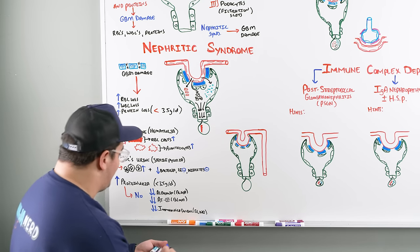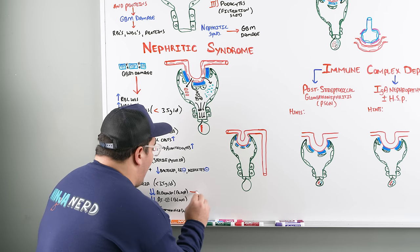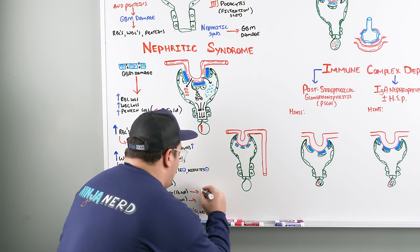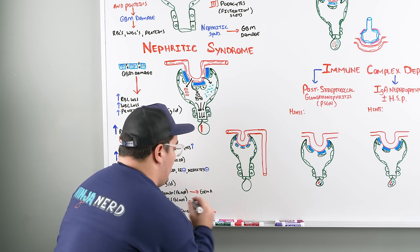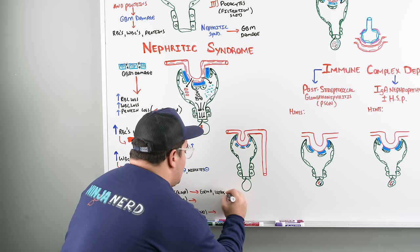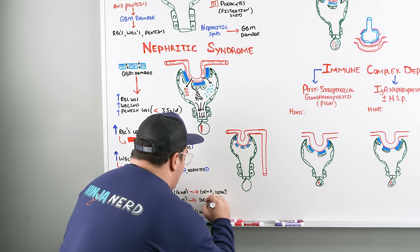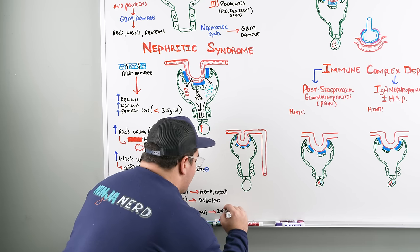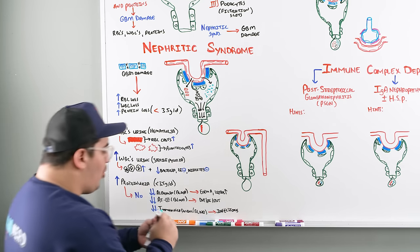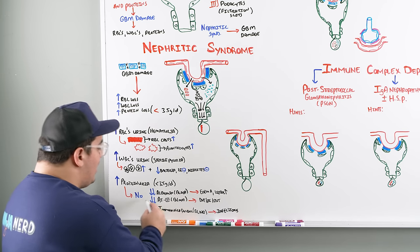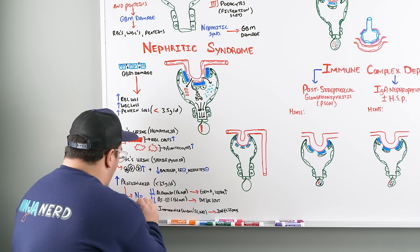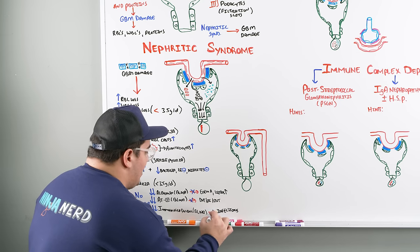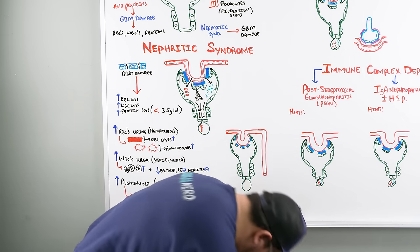These low protein findings — low albumin, low antithrombin 3, low immunoglobulins — are more suggestive of nephrotic syndrome. Therefore in nephritic syndrome patients, you won't see as much edema from hypoalbuminemia, elevated lipids from hypoalbuminemia, DVTs/PEs/renal vein thrombosis from low antithrombin 3, or infections from low immunoglobulins. That's an important distinction from nephrotic syndrome.